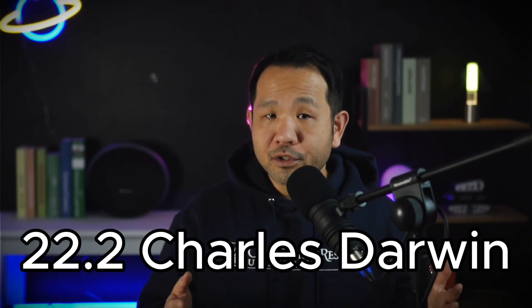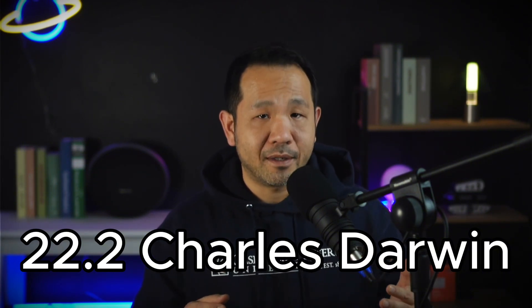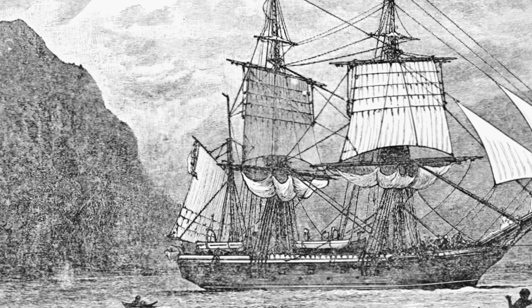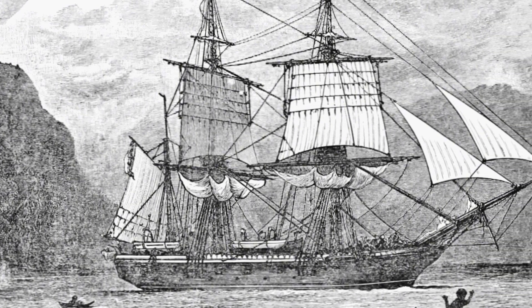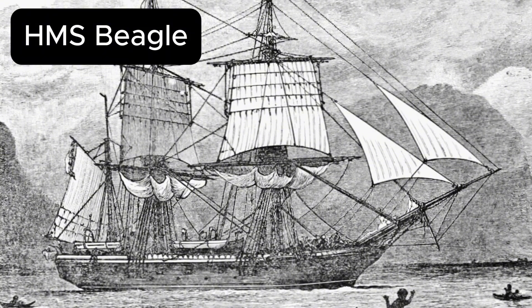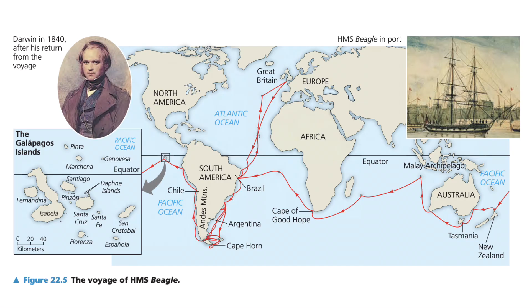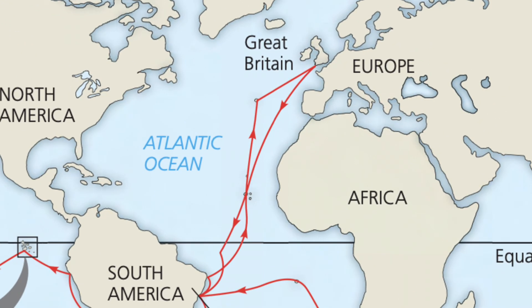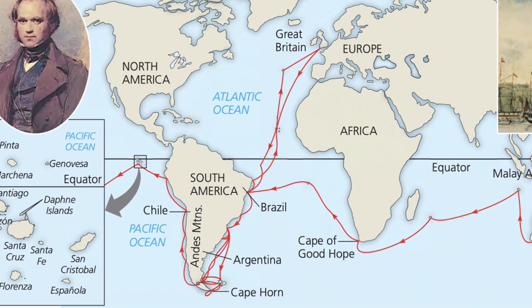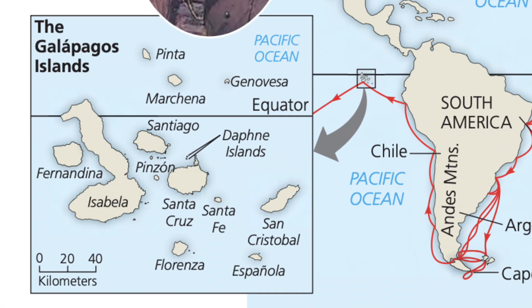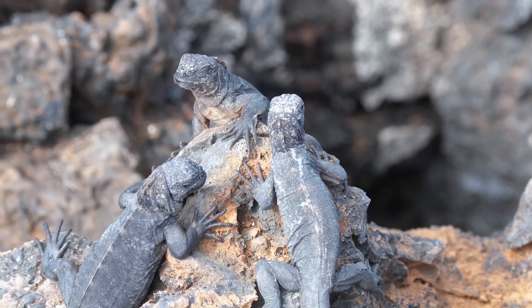Moving on to 22.2, we discuss Darwin's biography — that he was always interested in nature and collecting beetles, began studying medicine, then pivoted to theology before being recommended as a naturalist on a voyage around the world on a survey ship called the HMS Beagle. The journey was long and wide, beginning in Great Britain and traversing all the major oceans. Where we want to focus, however, is the Galapagos Islands, where Darwin made the majority of observations that led to his theory.